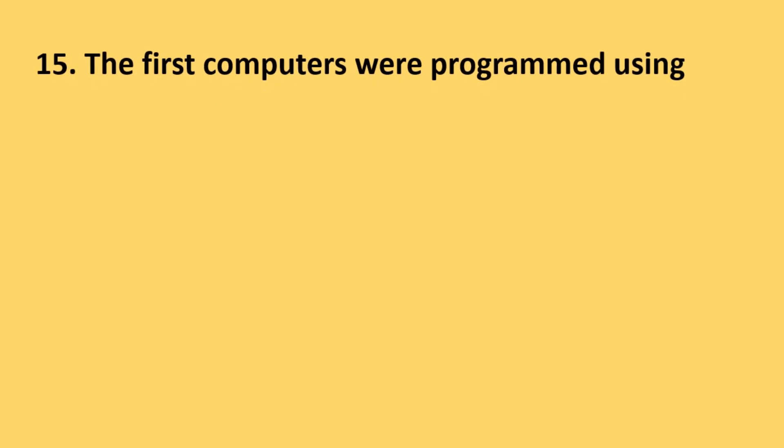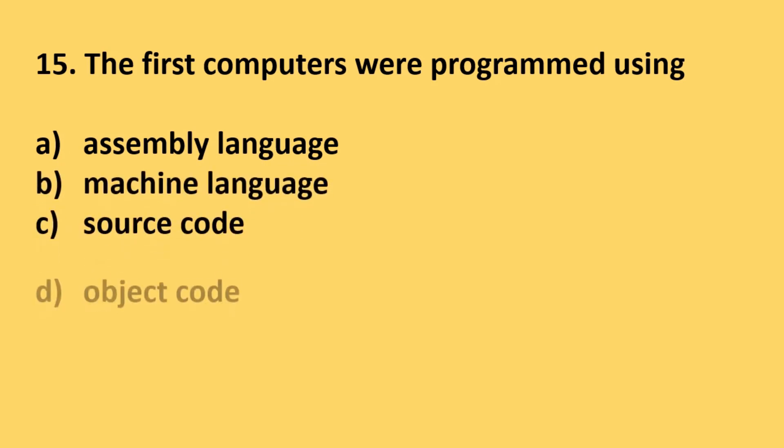Question number 15: The first computers were programmed using - options are assembly language, machine language, source code and object code. The correct answer is option B, machine language.